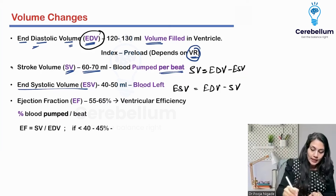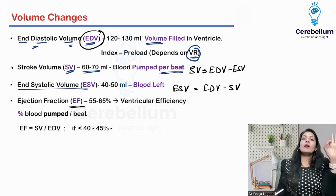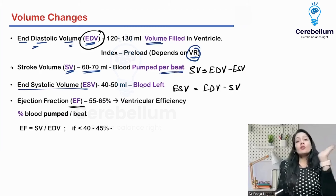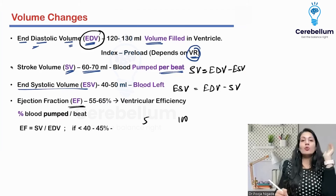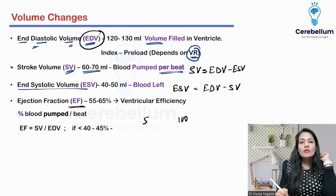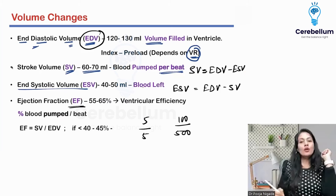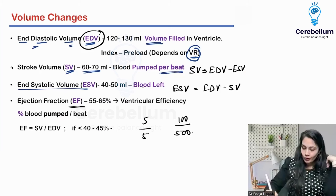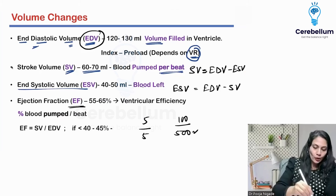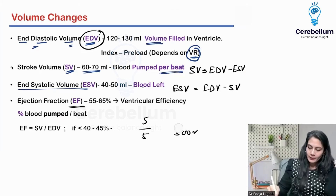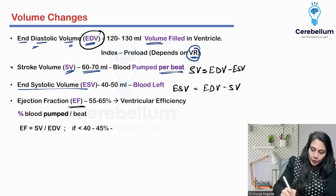Ejection fraction — percentage is always a better measure. For example, if one person got 5 marks and another got 100 marks, who is the winner? You don't know unless you know the total. If he got 100 out of 500, that's only 20%, while the other person got 100%. So percentage is always better, and that is why we calculate ejection fraction.